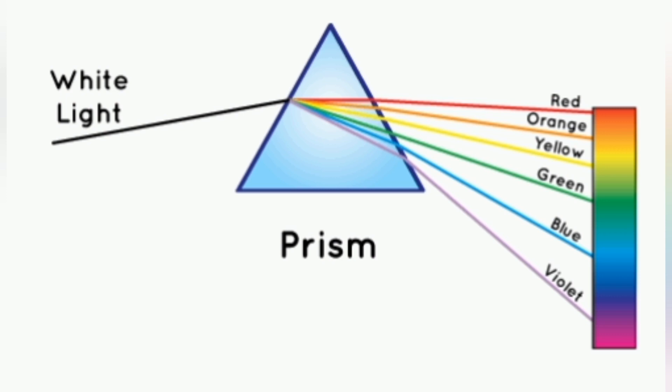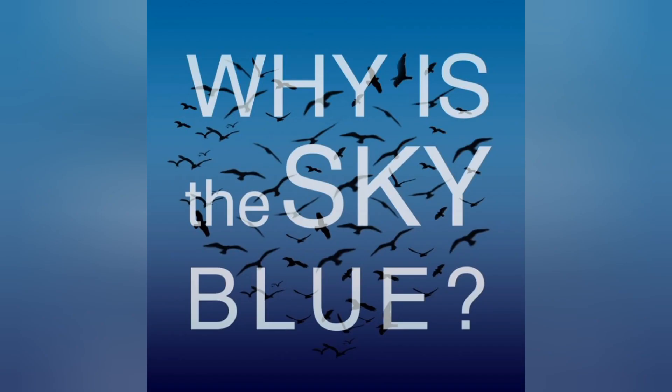The smallest wavelengths of light tend to scatter easier. These shorter wavelengths correspond to blue hues. Hence why, when we look at the sky, we see it as blue.